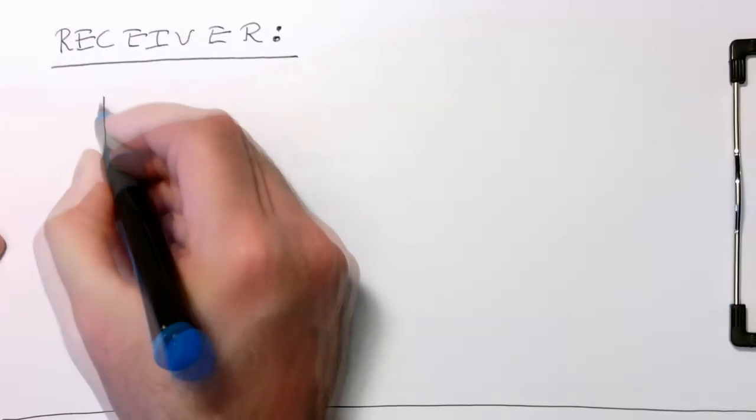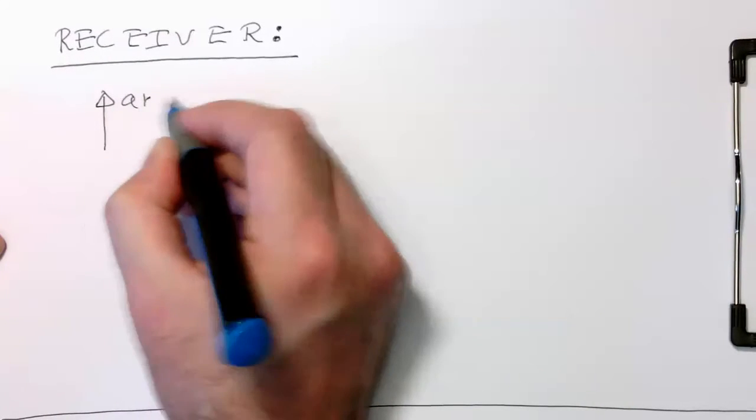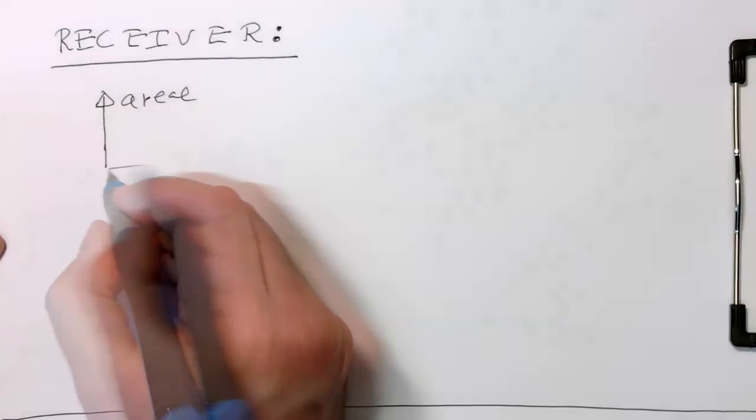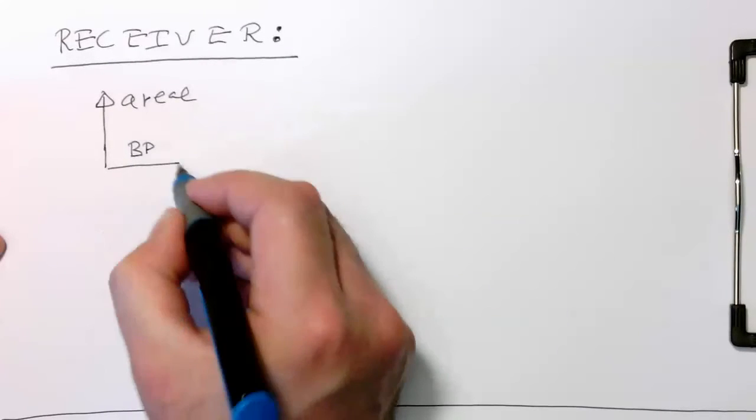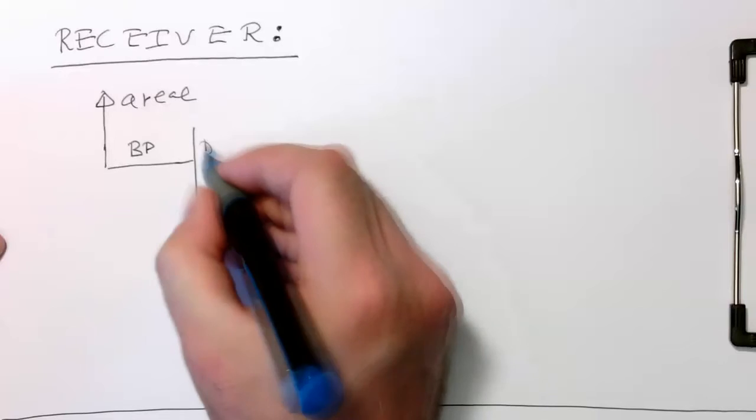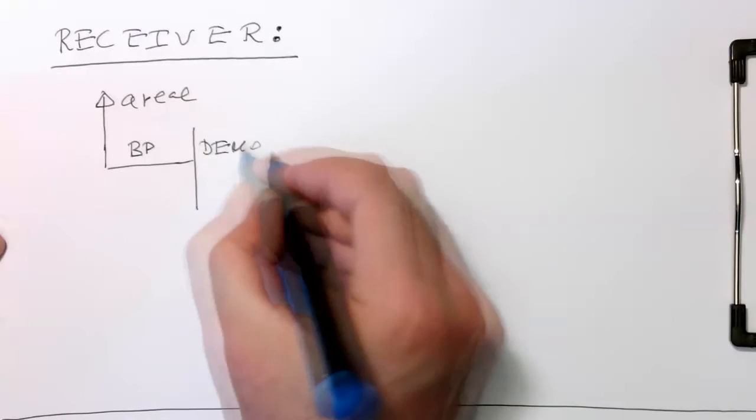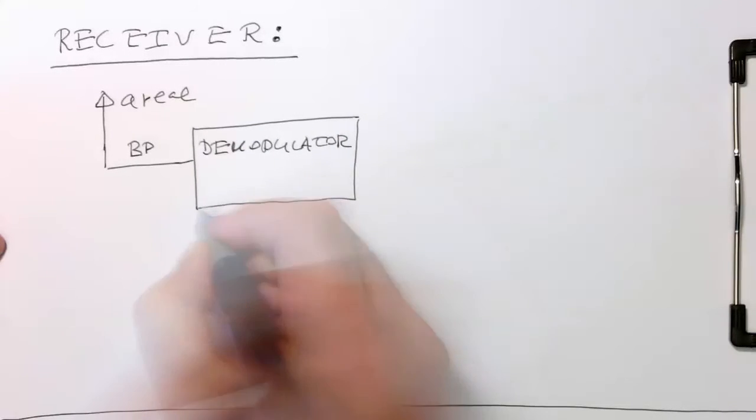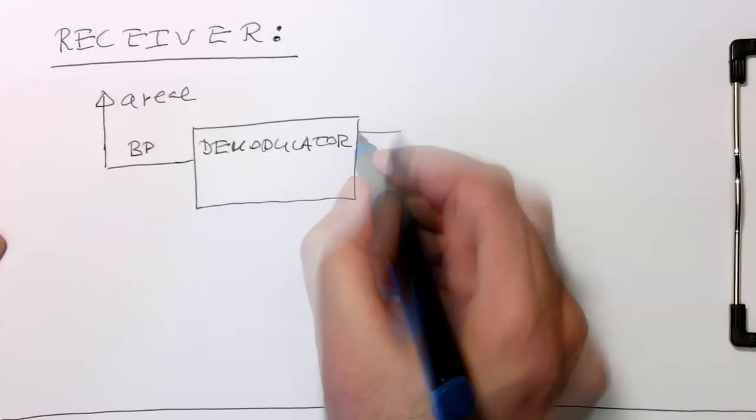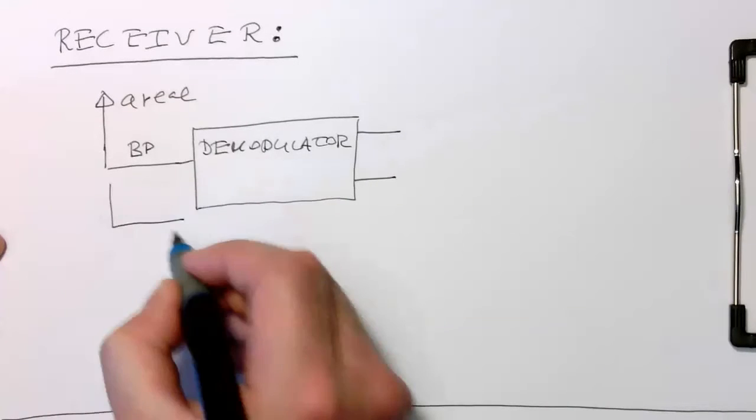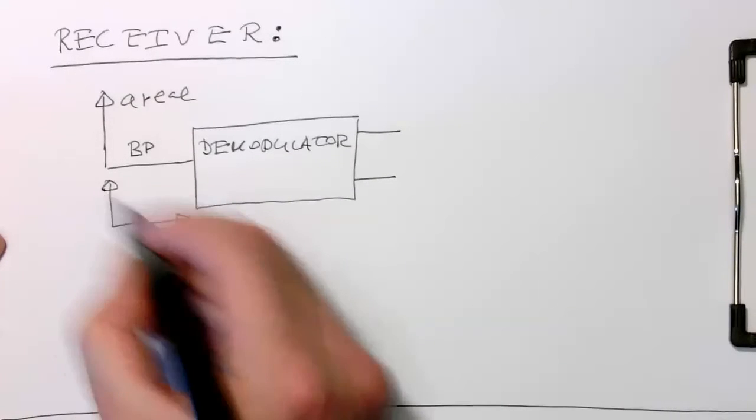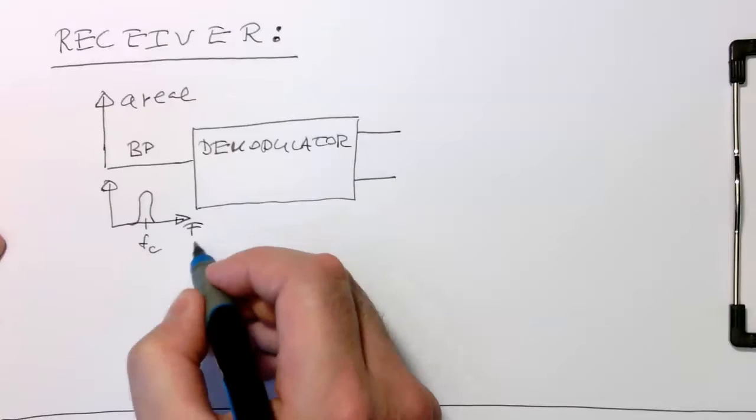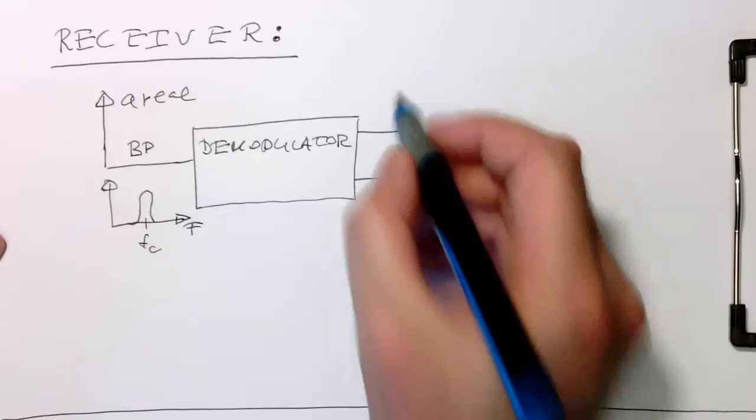So first we have got our area here. And so this signal is a band pass signal. And then this is sent into a demodulator. So that's our demodulator. And the demodulator turns this band pass signal, which is around carrier frequency fc, turns this band pass signal into our baseband signal here.